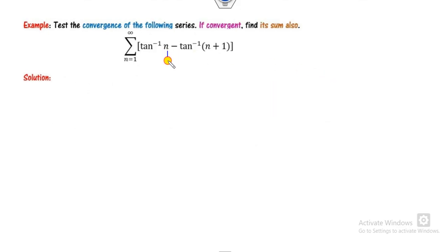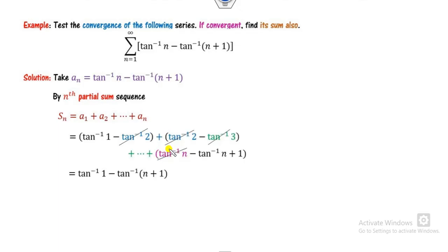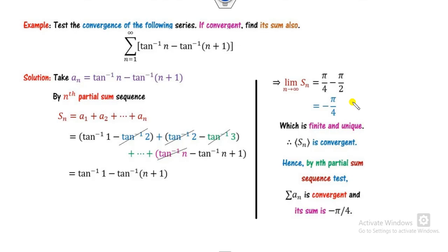Example 5: we have n and n+1 — consecutive terms. Applying the nth term test: tan⁻¹(∞) = π/2, so the limit gives π/2 - π/2 = 0, meaning the nth term test gives no information. We apply the nth partial sum sequence. After telescoping cancellation, taking the limit as n approaches infinity gives tan⁻¹(1) - tan⁻¹(∞) = π/4 - π/2 = -π/4, which is finite and unique. The sequence is convergent, and the series converges to -π/4.